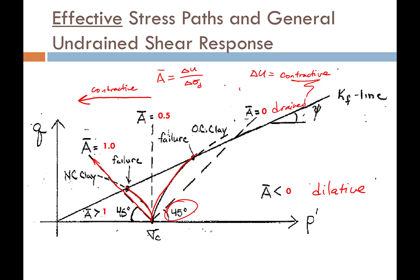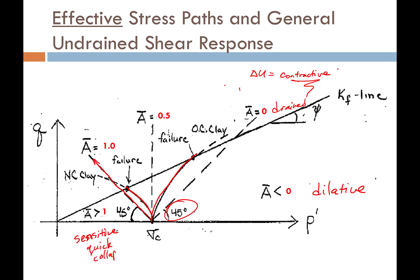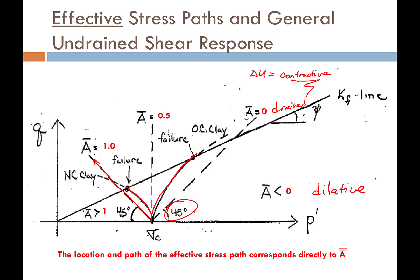When A-bar is greater than one, the pore pressure response exceeds the change in deviator stress, meaning the soil is collapsing. This range corresponds to sensitive, quick, or collapsible soils — a pretty dangerous situation for an engineer. The location and path of the effective stress path corresponds directly to Skempton's pore pressure parameter A.